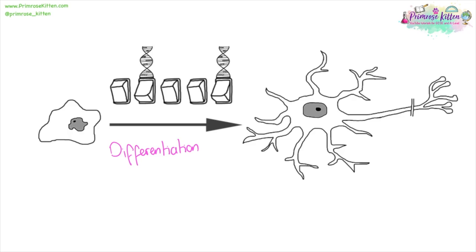All cells start off looking the same — they have your basic cell structure — and then various different genes will be turned on and turned off, and that's when it will start to specialise. That's when differentiation will take place and it will grow this really, really long axon, or it will grow the villi, or it will turn into a leaf cell.